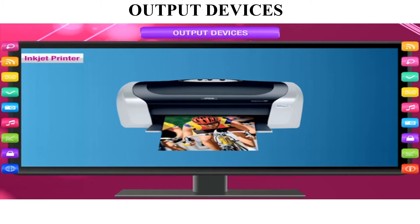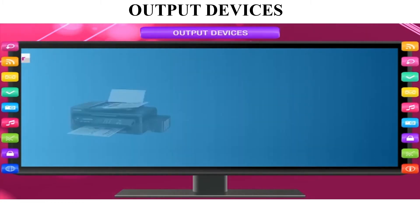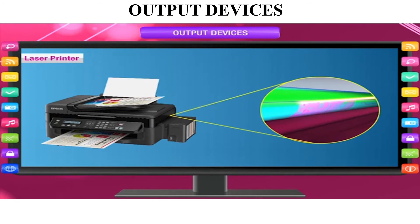The inkjet printer can print color pictures. It uses ink — you assign the ink cartridge and the printer will print. You can see color pictures being printed from the inkjet printer.